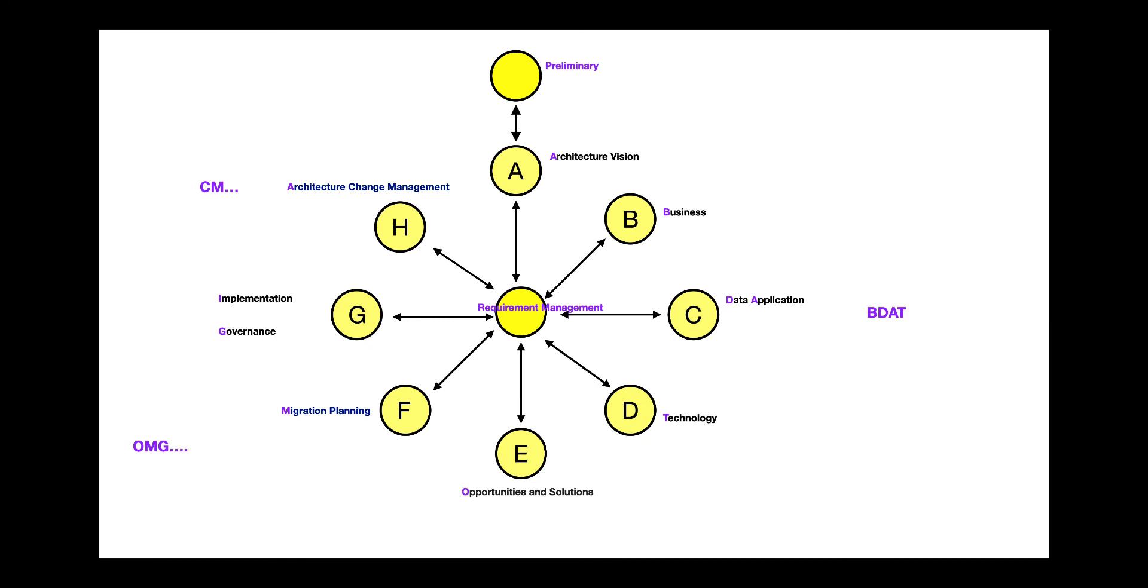I remember this ADM cycle - I just first draw the four circles north, south, east, west, and then between the two circles I create one more circle. Then we have the center circle for requirement management, top for preliminary phase. A stands for architecture vision. BDAT is how the phases B, C, D are denoted. Then remember OMG - that is opportunity, migration planning, and implementation governance, and CEM - that is architecture change management.